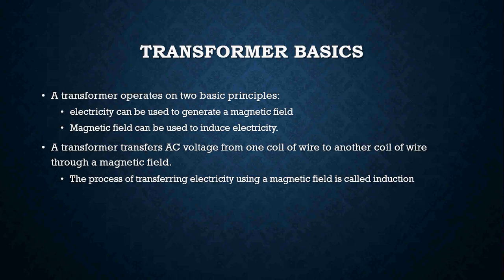A transformer really operates off of two basic principles. It operates off of the principle that electricity can be used to generate a magnetic field, and it also operates off of the principle that a magnetic field can be used to actually induce electricity. A transformer transfers AC voltage from one coil of wire to another coil of wire through the use of a magnetic field. This process of transforming electricity using a magnetic field is called induction.